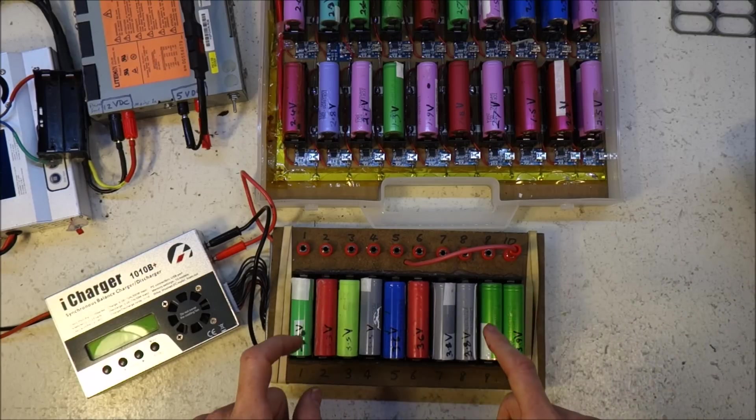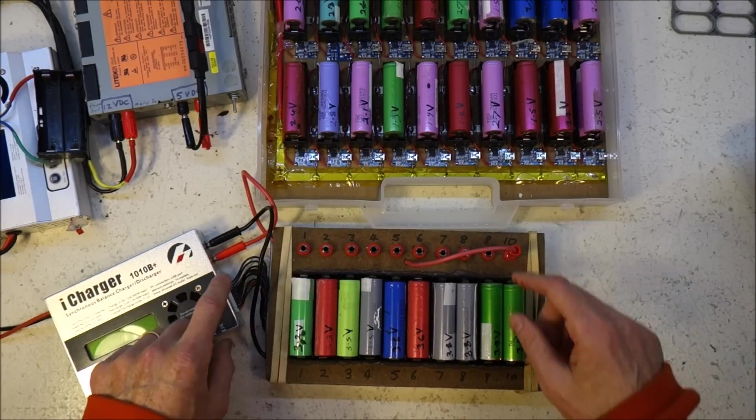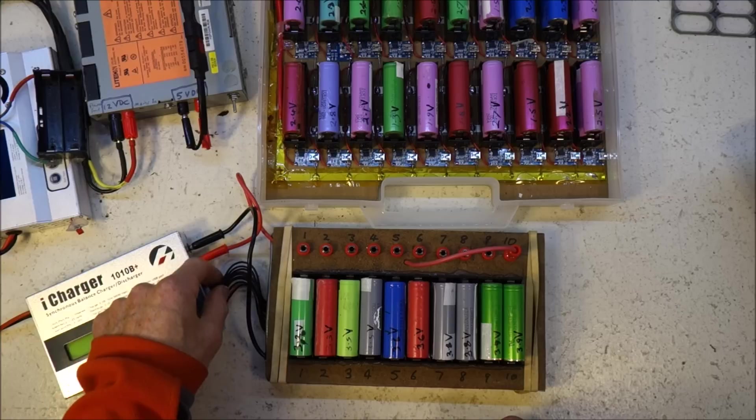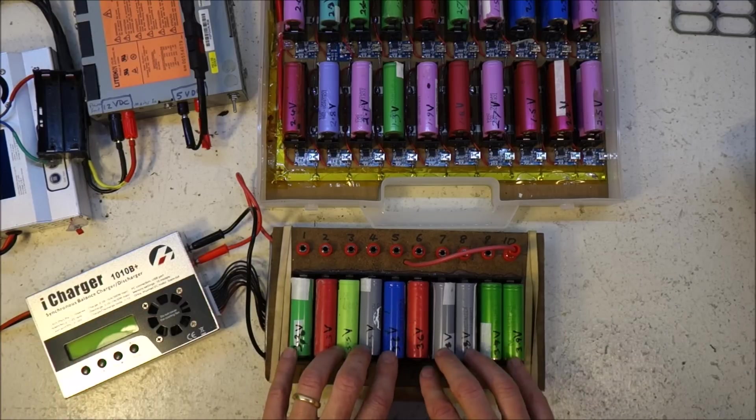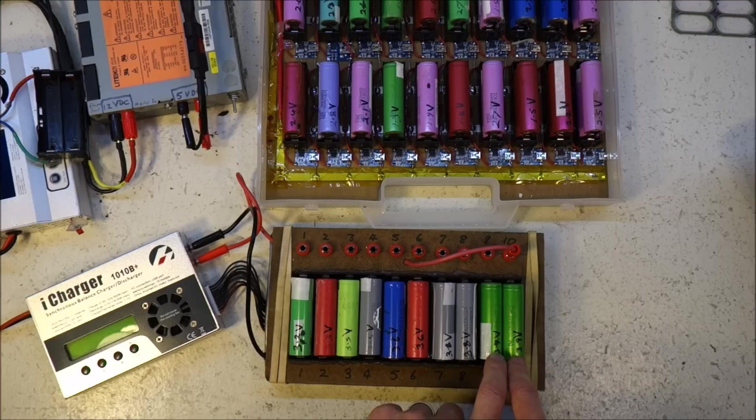And when one does, then it stops charging through these leads and it starts trickle charging through the balance leads. So when I'm charging this from the iCharger, these 3.9 volt cells are probably going to hit 4.2 volts first.